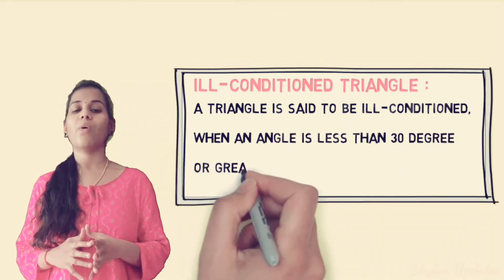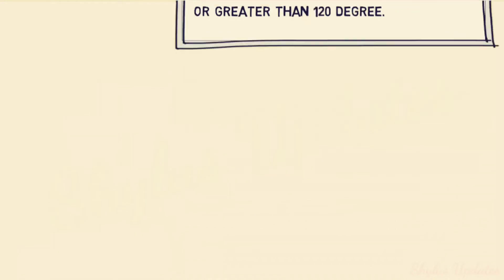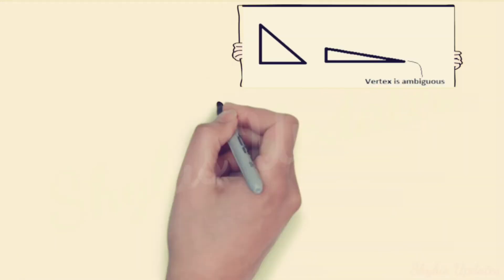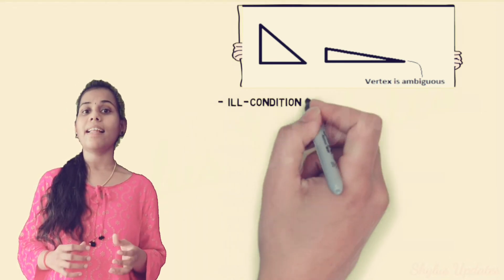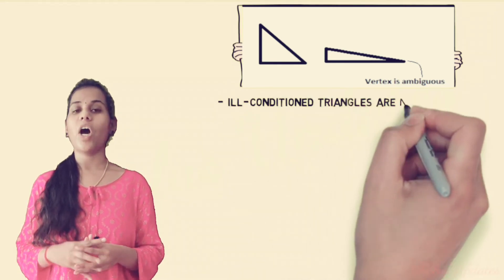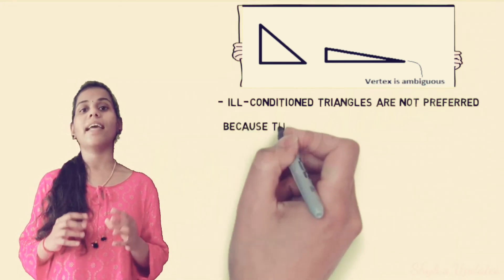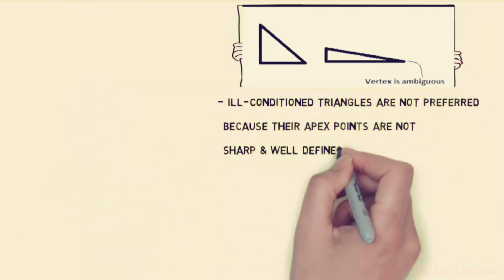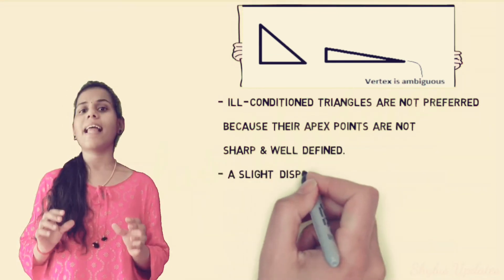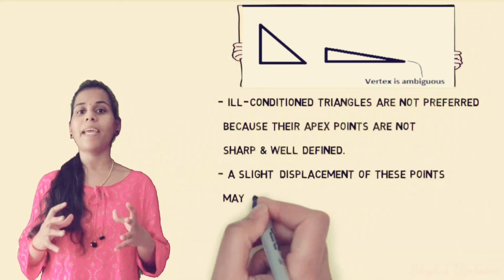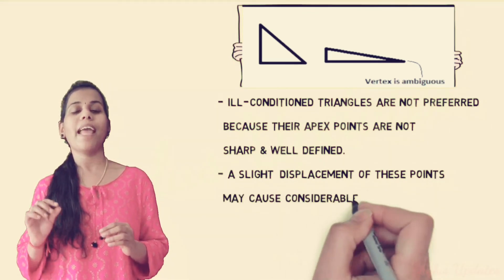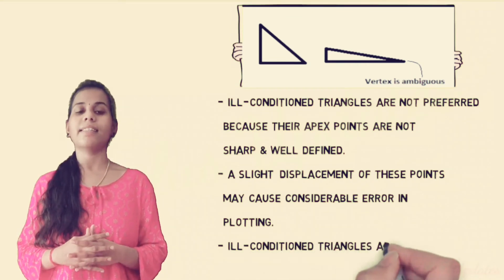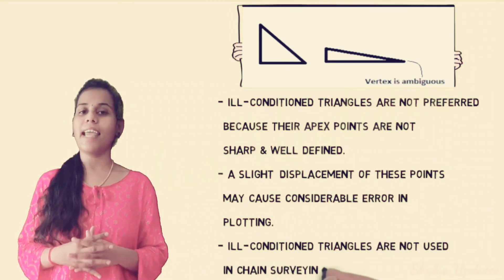Ill-Conditioned Triangle: Ill-Conditioned Triangles are not preferred because their apex points are not short and well-defined. A slight displacement of these points may cause considerable error in plotting. Ill-Conditioned Triangles are not used in chain surveying.